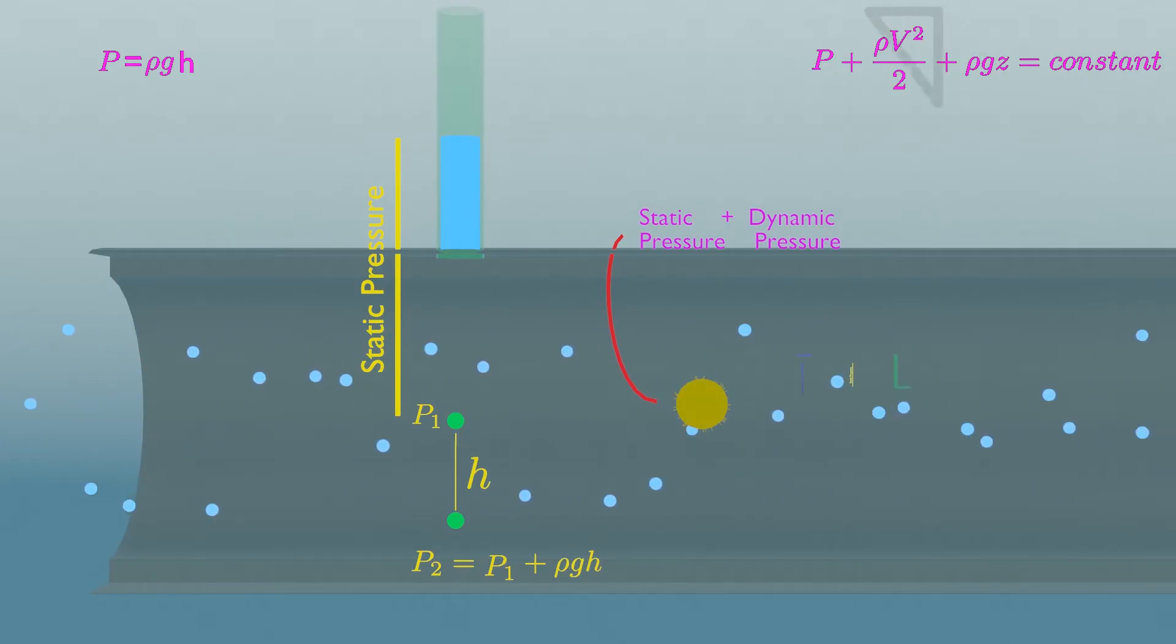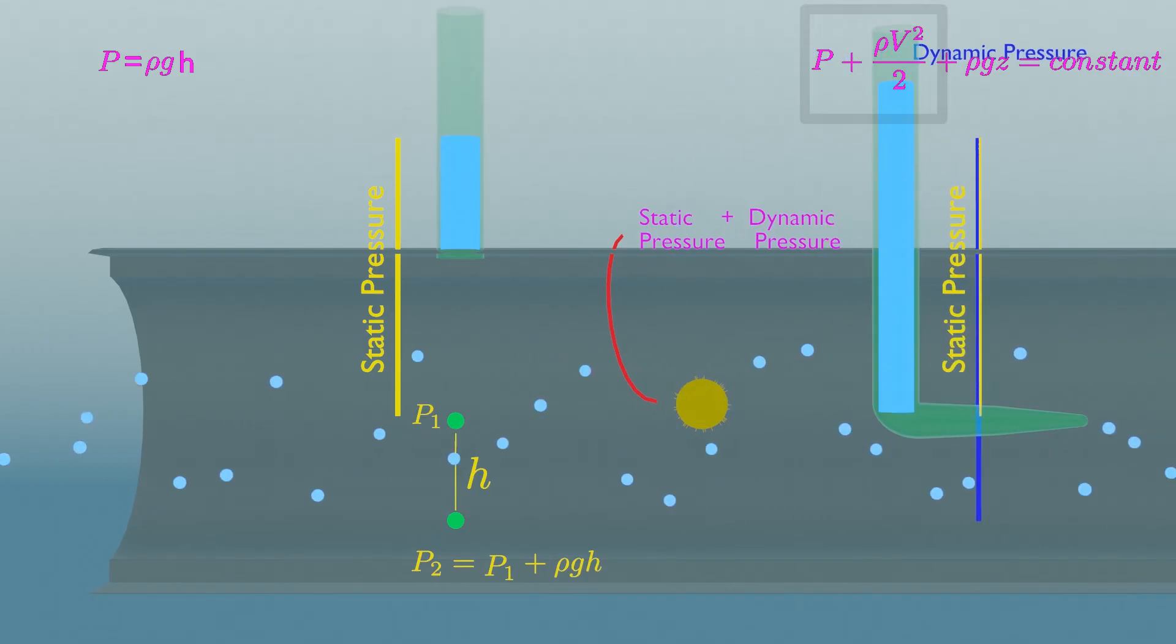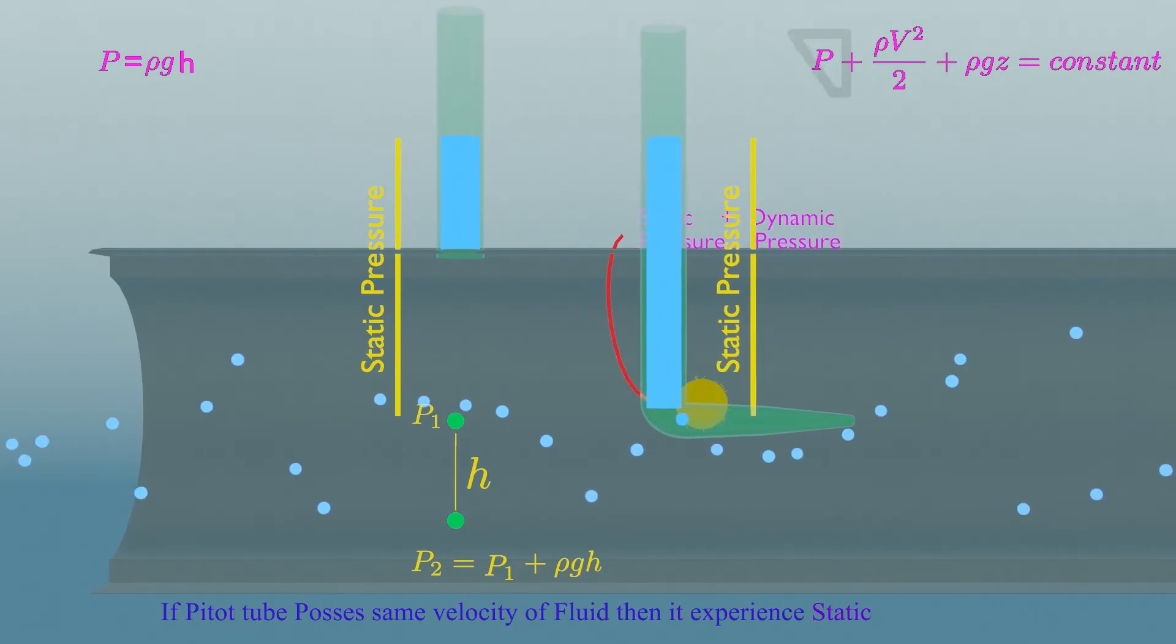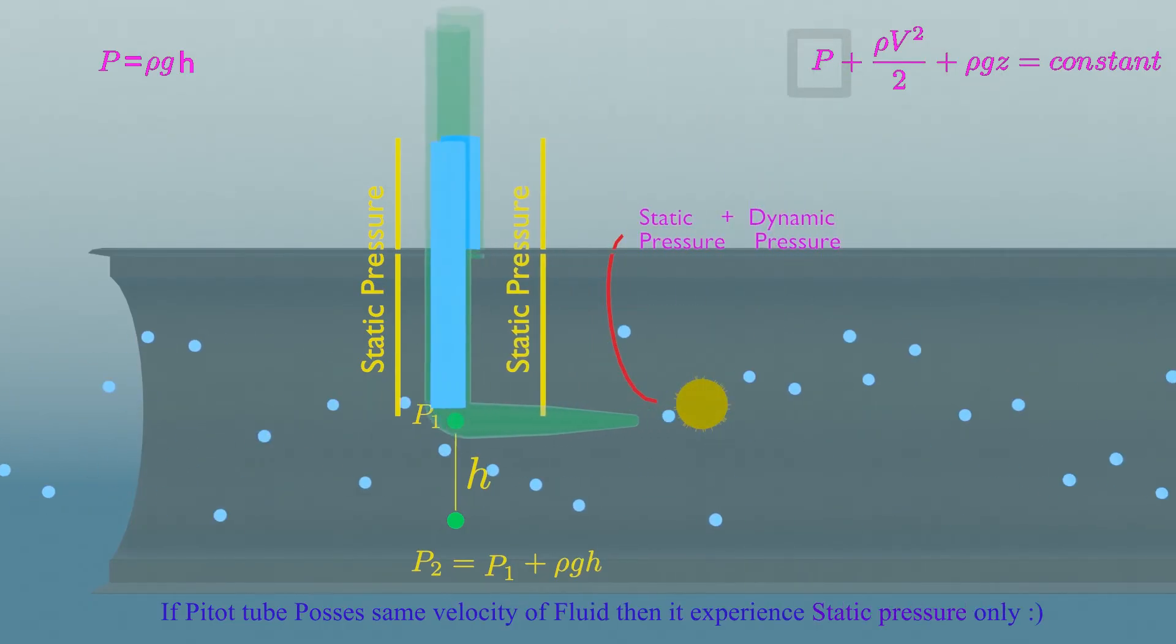You can visualize this dynamic pressure with a pitot tube. When fixed at a point, it experiences both static and dynamic pressure. But if this pitot tube has same velocity of the fluid, then it experiences static pressure only.